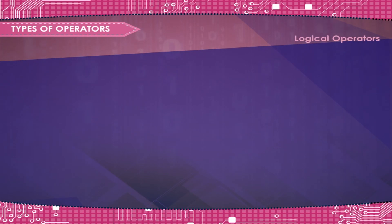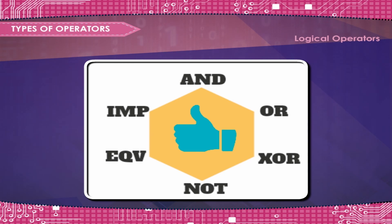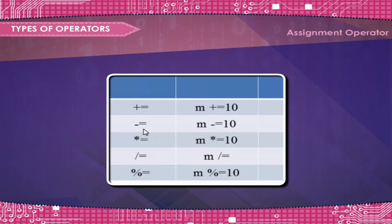Logical operators combine two or more relational expressions to produce a single value. This value can either be true, 1, or false, 0. Some logical operators are and, or, and not. An assignment operator is used to assign the result of an expression to a variable.